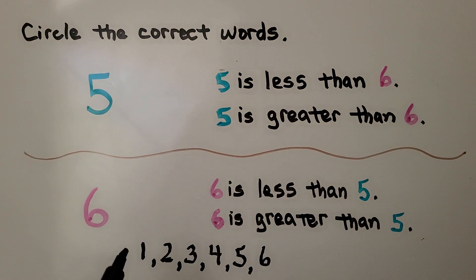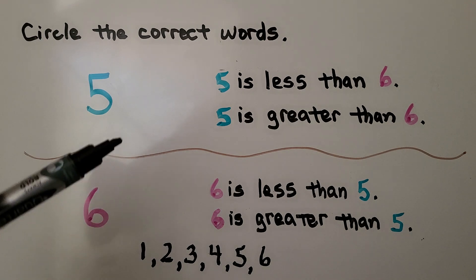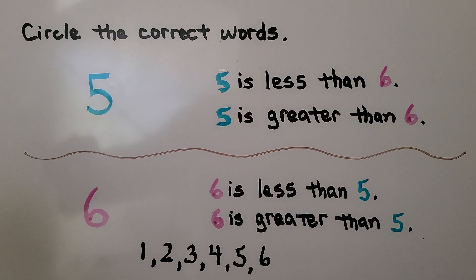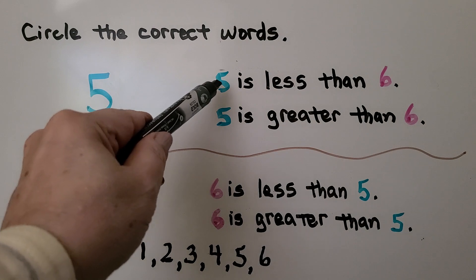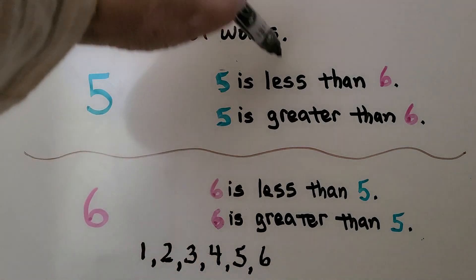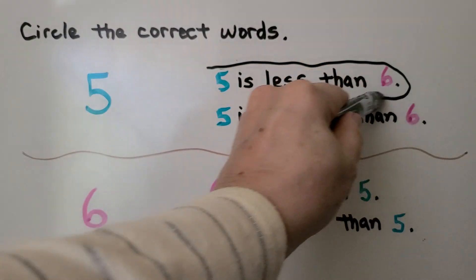When we write the numbers in counting order — one, two, three, four, five, six — we see five comes first in counting order. Five is less than six. We need to circle the correct words. We see five is less than six, so we can circle this one. This is the correct one.